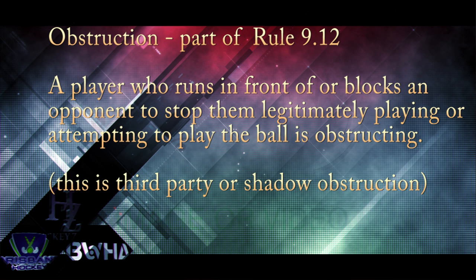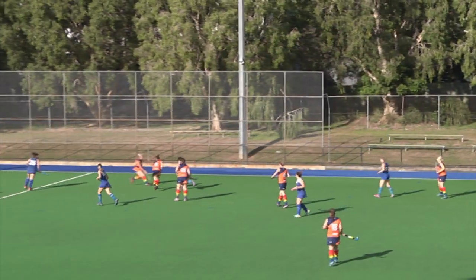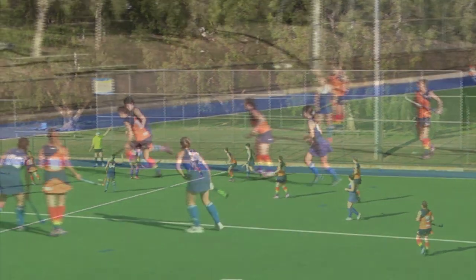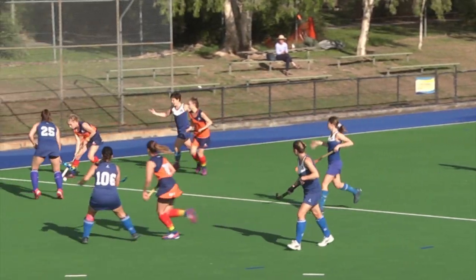We've looked at backing in and body obstruction, and now we'll look at third-party obstruction. The rule states a player who runs in front of or blocks an opponent to stop them legitimately playing or attempting to play the ball is obstructing — this is third-party or shadow obstruction. This also applies if an attacker runs across or blocks defenders, including the goalkeeper or player with goalkeeping privileges, when a penalty corner is being taken. In summary, you cannot use your body to prevent legitimate playing of the ball from an opponent. This can happen by the person in possession of the ball and also by the opponents.